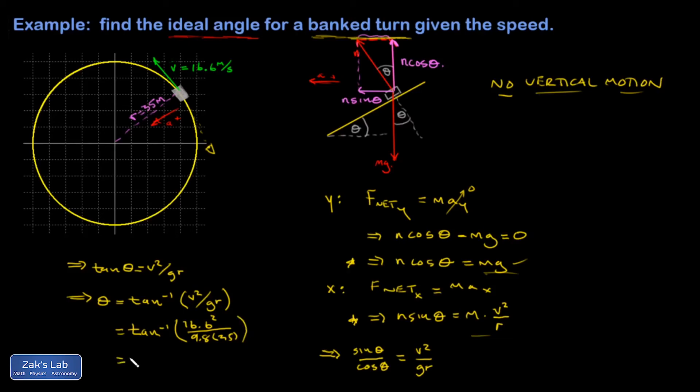And we've got some numbers to crunch this time. So I have 16.6 squared divided by 9.8 divided by 35. Angle whose tangent is that number, and I get 38.8 degrees.